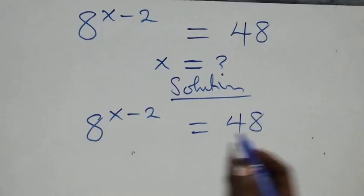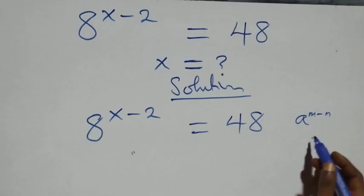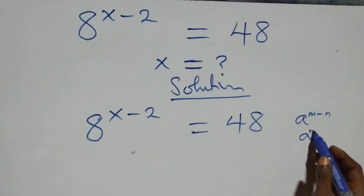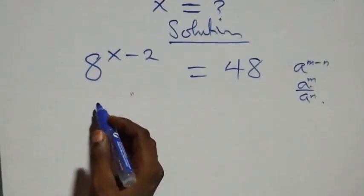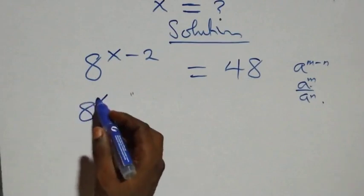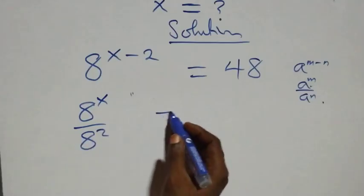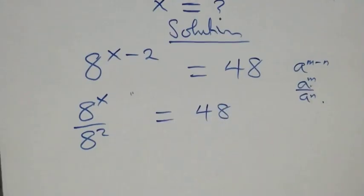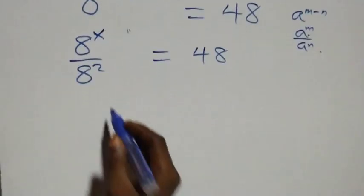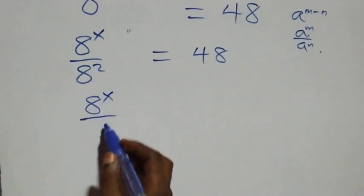This follows from the rule that a raised to power n minus m is the same as a raised to power n over a raised to power m. So we can rewrite eight raised to power x minus two as eight raised to power x over eight squared, which is sixty-four.